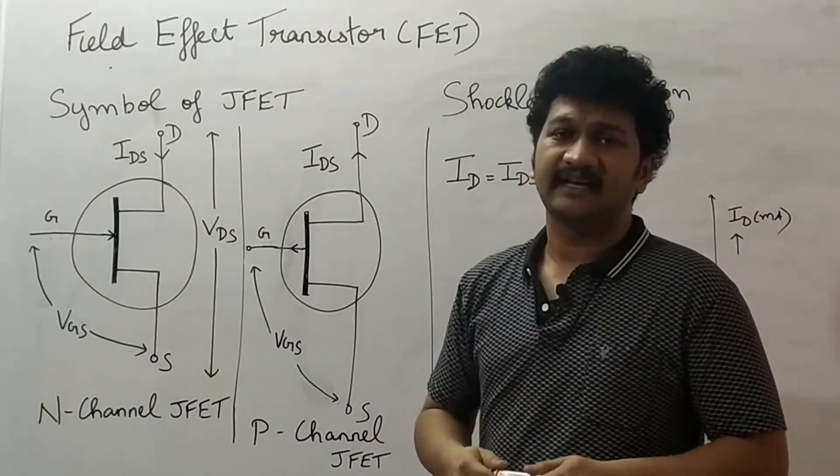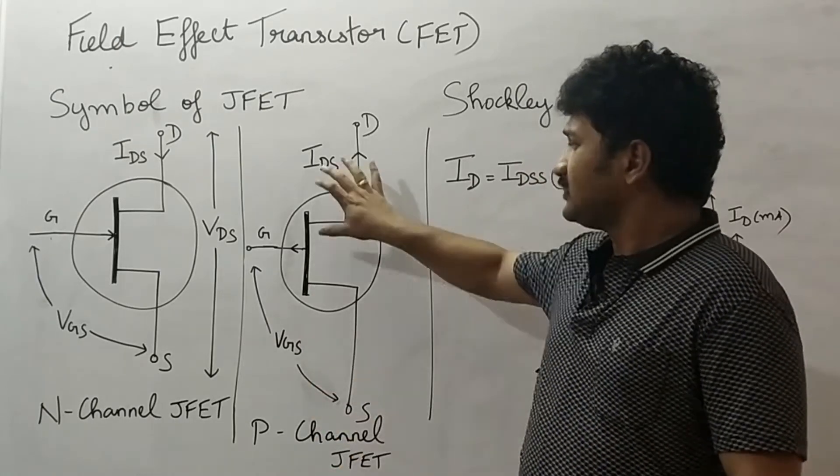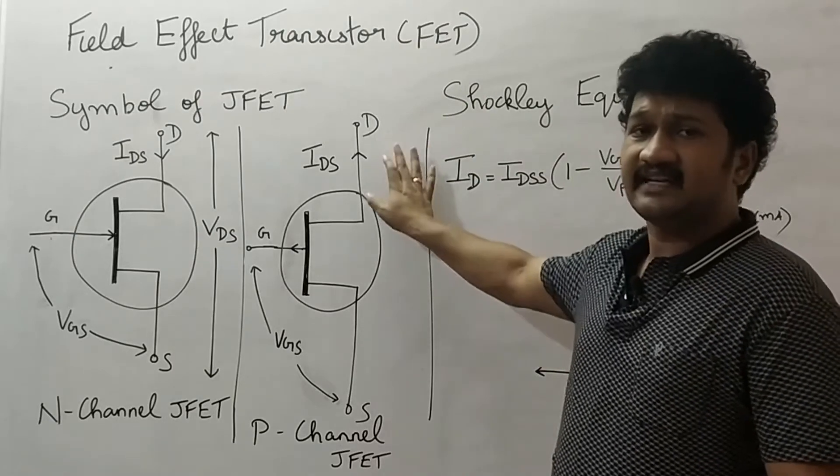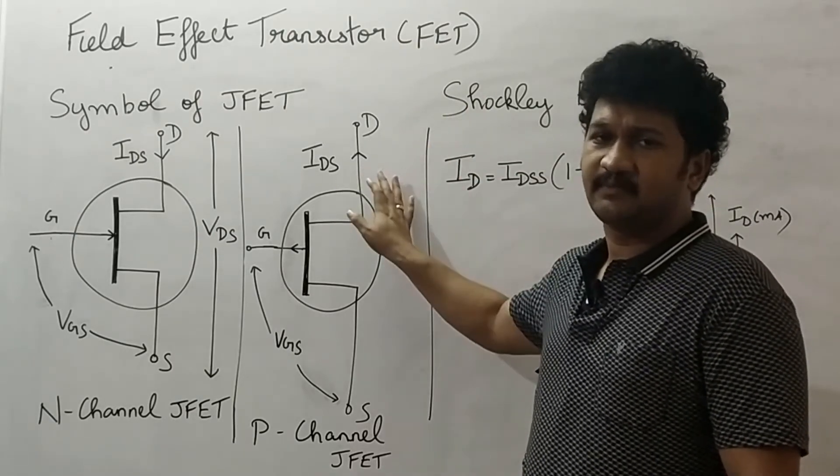In this case also, drain to source voltage is reverse biased. Holes get attracted towards the negative terminal of the drain to source voltage.